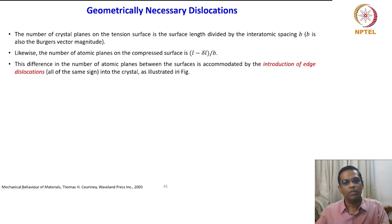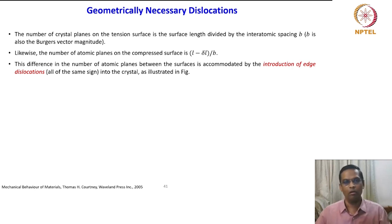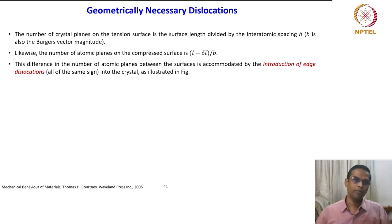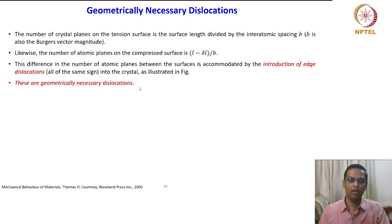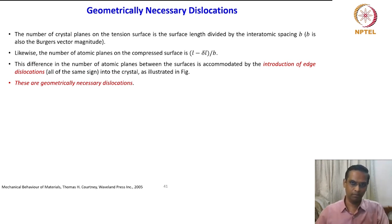The difference in the number of atomic planes between the surfaces is accommodated by introduction of edge dislocations — extra half-planes introduced all over the outer surface to increase its length. This kind of dislocation is called a geometrically necessary dislocation. To keep up the geometry of the additional length, we are introducing dislocations into the crystal system — that is why they are called geometrically necessary dislocations.